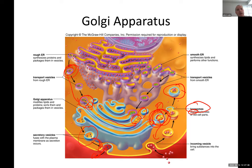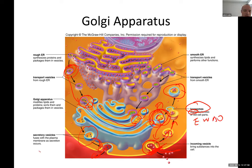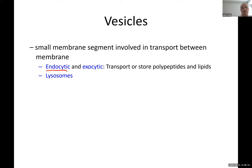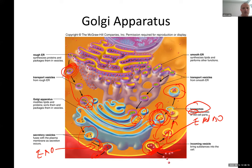Vesicles that form at the cell membrane and bring material inside the cell are called endocytotic — endo meaning inside. So there are endocytotic and exocytotic vesicles. Lysosomes are one example of these vesicles.